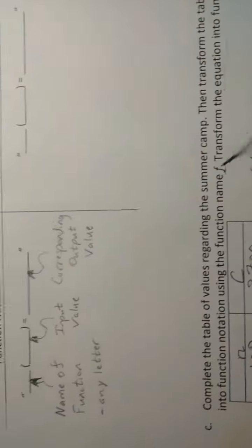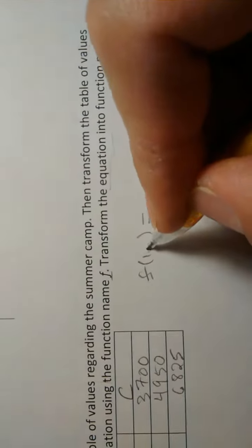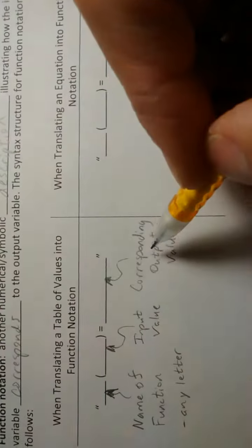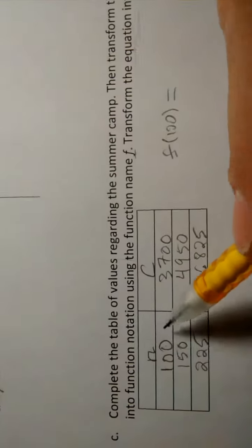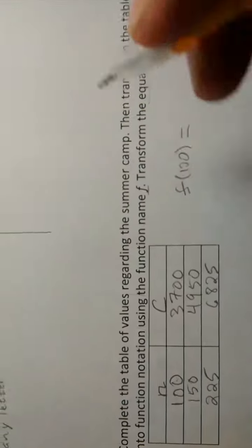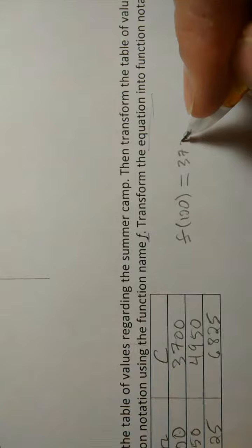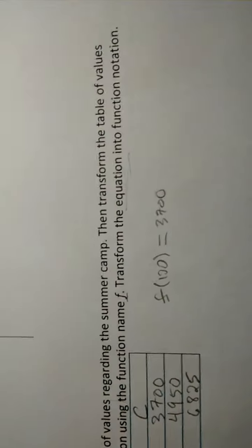What goes in the parentheses is an input value. So let's do 100. And what goes to the right of the equal sign is the corresponding output value. Well, what's corresponding to 100? 3,700 is.